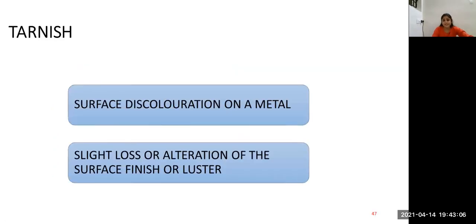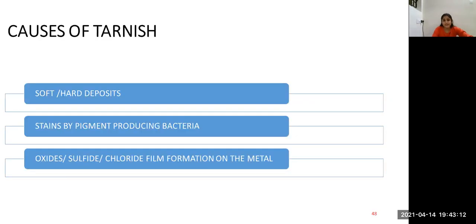Tarnish is the surface discoloration on the metal. It is a slight loss or alteration of the surface finish or luster. Causes of tarnish are soft and hard deposits on the surface of the restoration, stains by pigment producing bacteria, oxide, sulfides or chloride film formation on the metals.